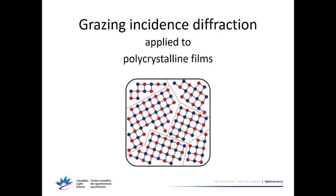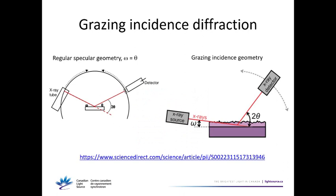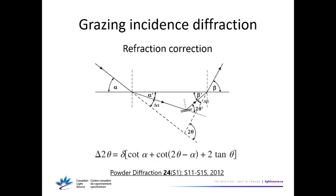If your sample is polycrystalline, you can do grazing incidence powder diffraction — the same powder diffraction normally done in θ-to-θ scans, except you keep the incidence angle fixed at a very grazing angle to be more sensitive to the thin film, and sweep the detector in 2θ. In this geometry there are several corrections including absorption, Lorentz-polarization, atomic scattering factor, and importantly refraction — the beam refracts at the surface causing a shift in diffraction peak positions that is more significant at more grazing angles.